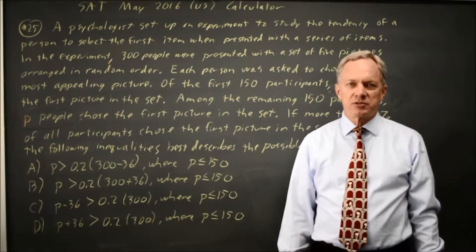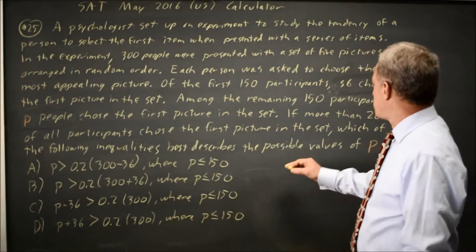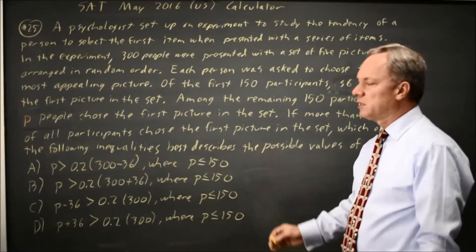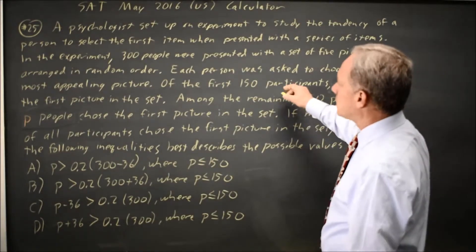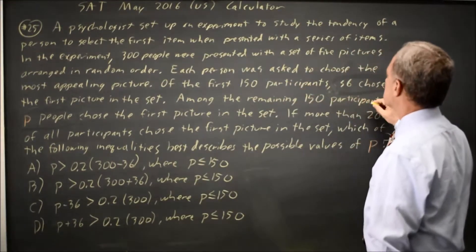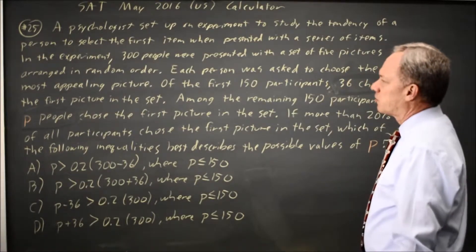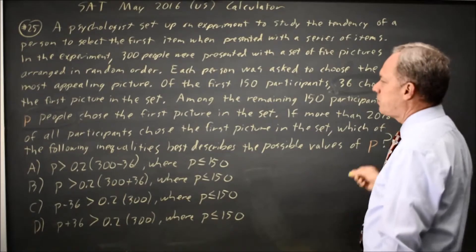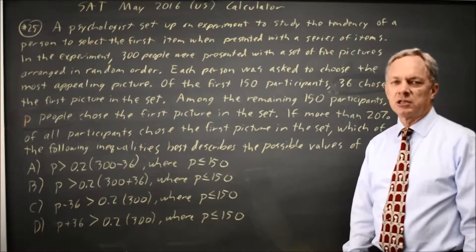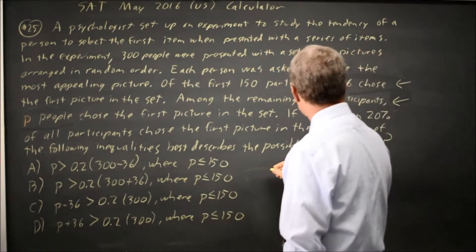College Board gives you a long paragraph describing an experiment and asks which of these inequalities describes the possible values of P. In the first 150 participants, 36 people chose the first picture, and in the next 150 participants, P people chose the first picture, and you want that total to be at least 20% of all participants.